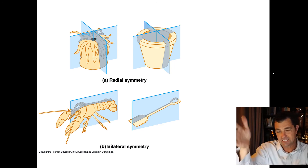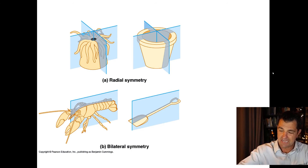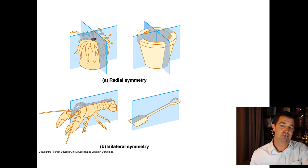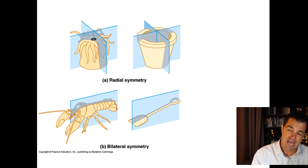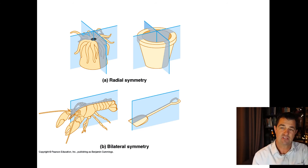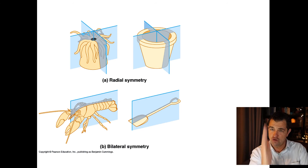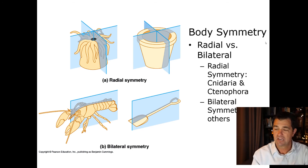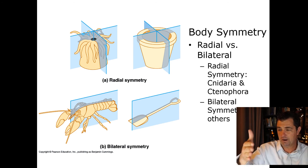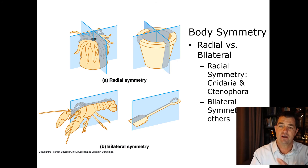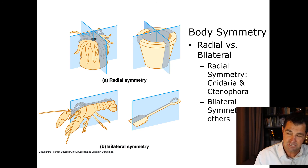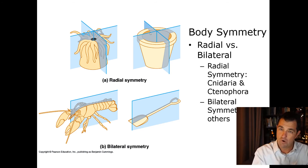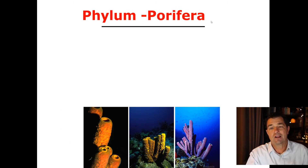Radial symmetry is like a wheel — you can slice an organism in many different directions and what's on the right is still like what's on the left. Bilateral symmetry, like us, means there's really only one plane you can cut — right down the middle — to get matching right and left halves. For example, this pot has radial symmetry, while a shovel or a lobster has bilateral symmetry.